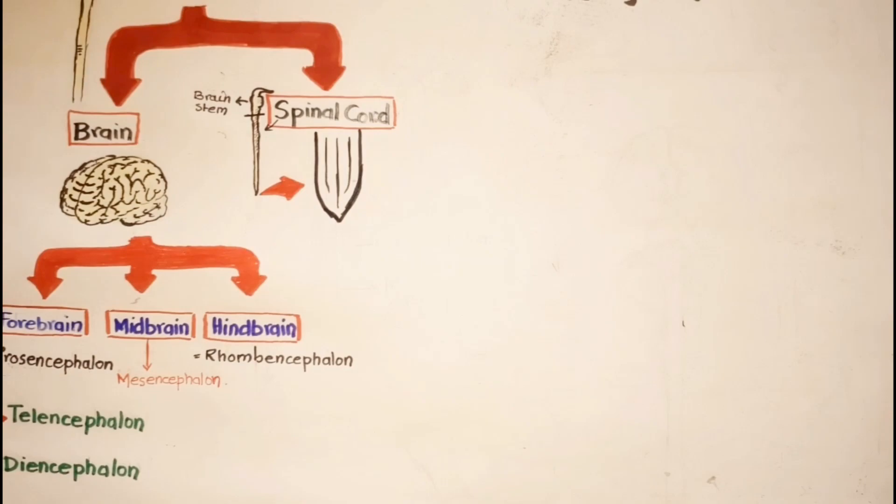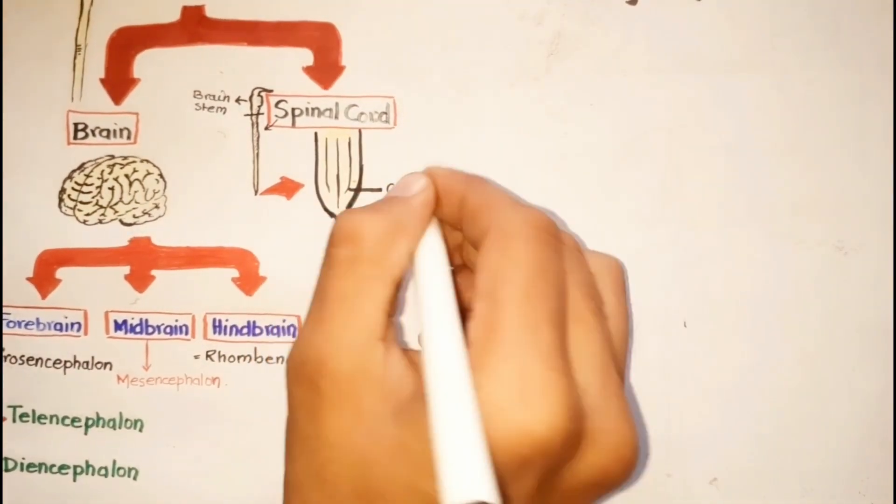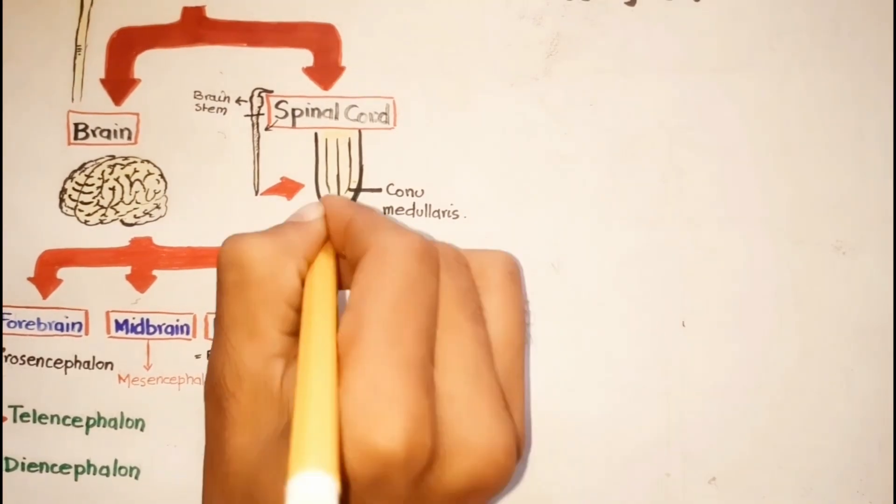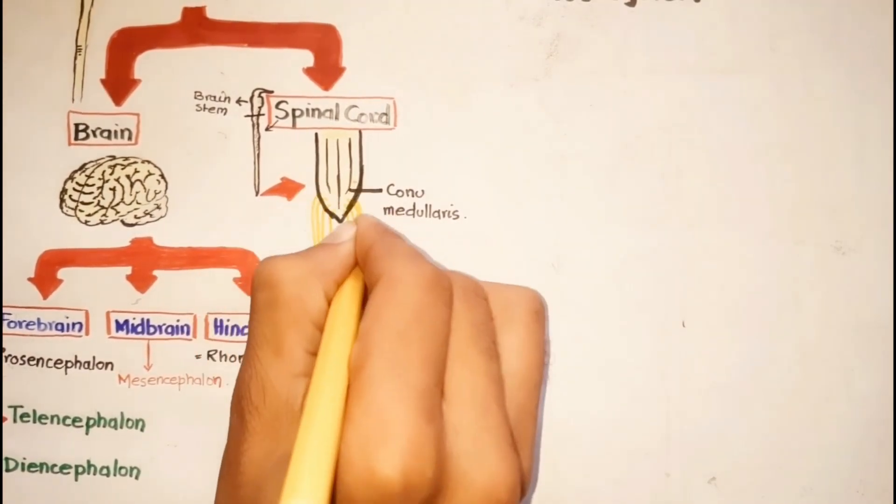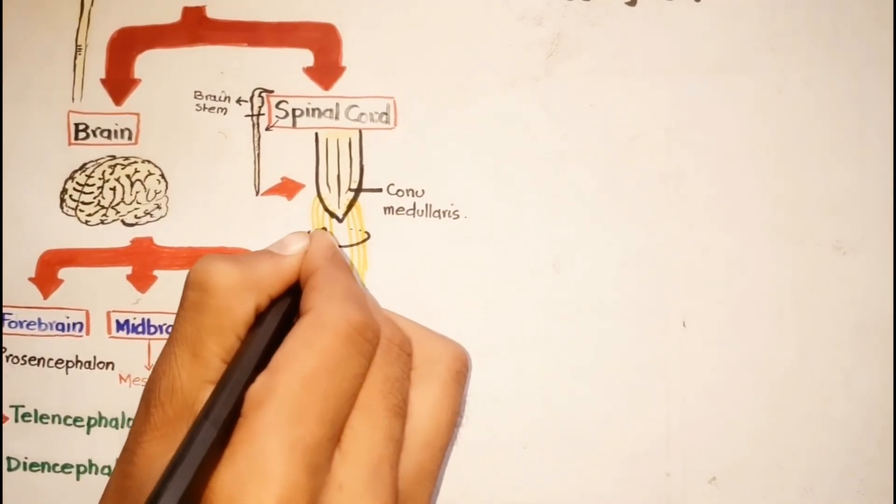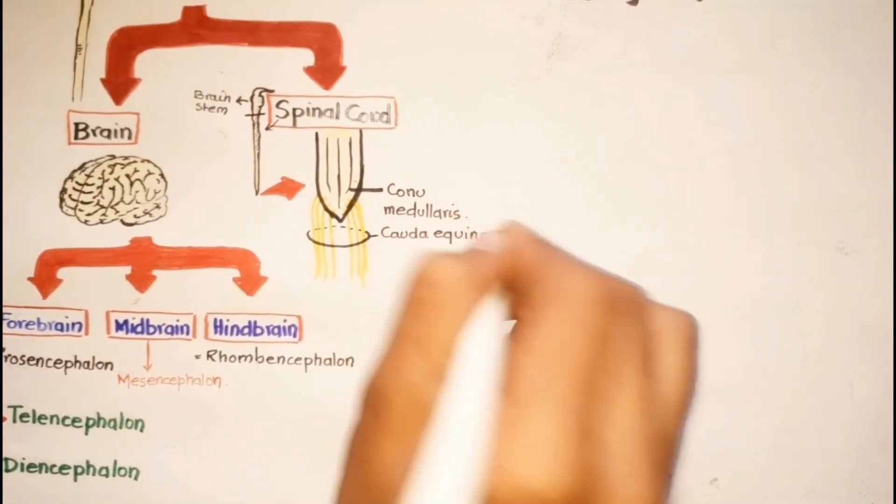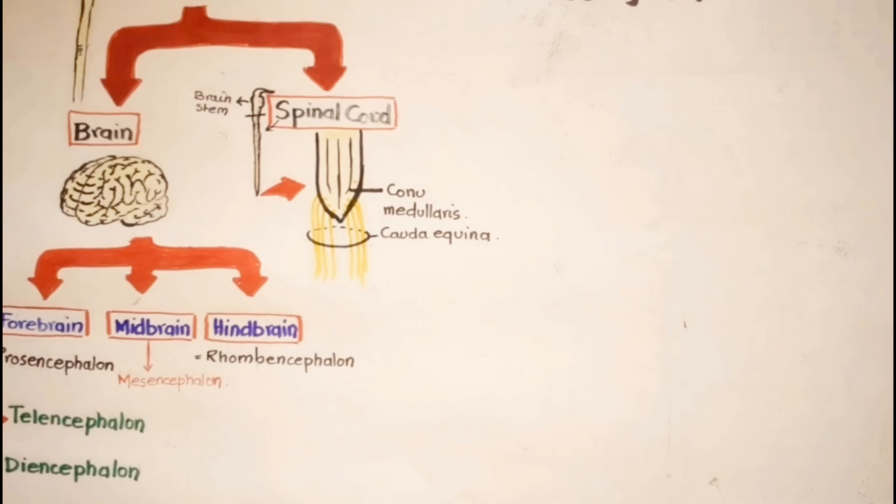The narrow tapering cord at this termination is called the conus medullaris. The neural fibers continue in the vertebral canal as the cauda equina, a structure that resembles a horse's tail.